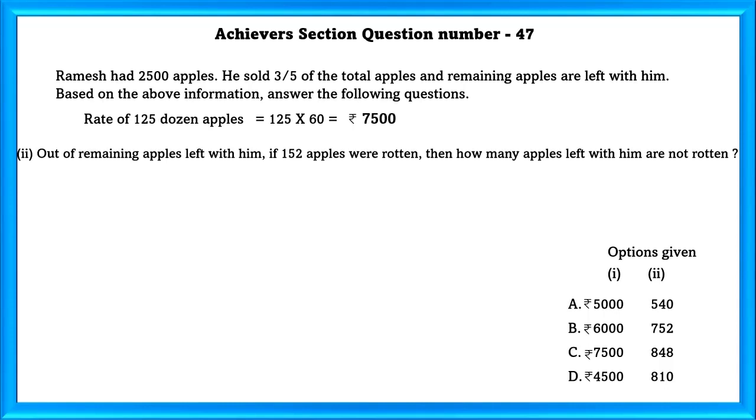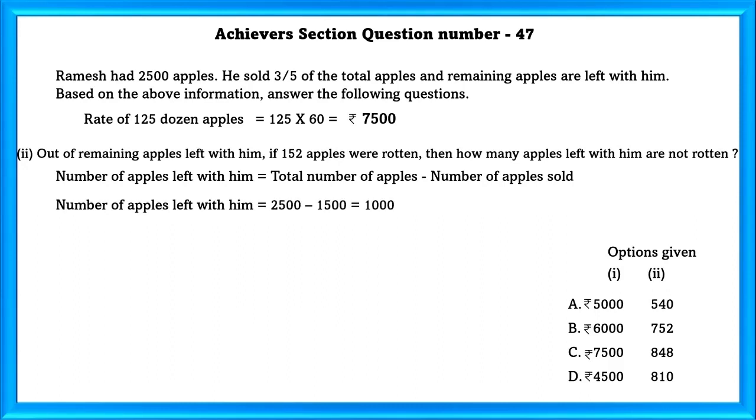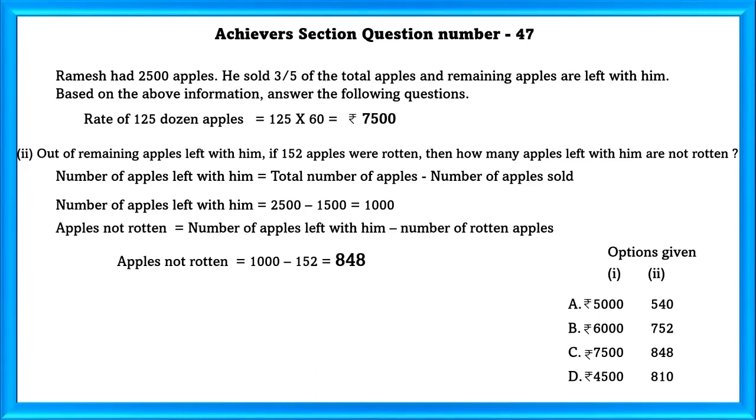Question 2. Out of the remaining apples left with him, 152 apples were rotten. Then how many apples are left with him that are not rotten? Number of apples left with him is equal to total number of apples minus number of apples sold which is equal to 2500 minus 1500 which is equal to 1000. Apples not rotten equal to number of apples left with him minus number of rotten apples which is equal to 1000 minus 152 which is equal to 848. So our answer is C.